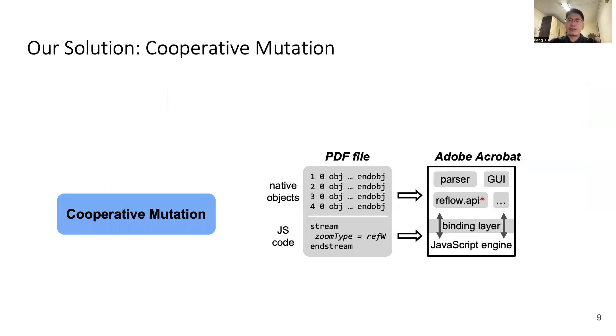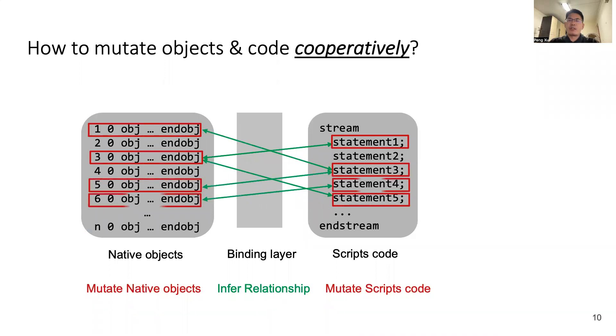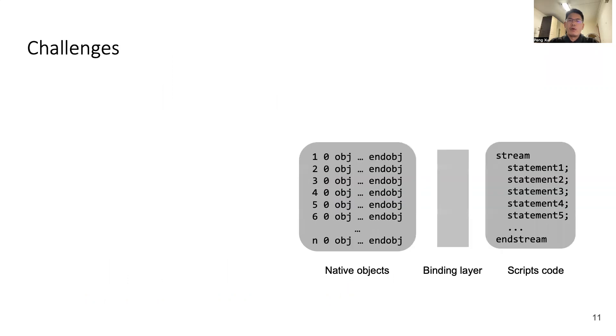In light of this vulnerability, we want to design a new solution to discover vulnerabilities related to both native objects and scripts code. Our solution is cooperative mutation. It's fairly straightforward. We mutate both native objects and scripts code in a cooperative manner. So, we come to the problem: How to achieve cooperative mutation? First of all, we need to infer the relationship between native objects and scripts code. And then, we use the inferred relationship to guide mutations on both sides. Specifically, if a scripting API has a potential connection with some objects in a document, we will assign these objects a high priority for mutations. Otherwise, we just randomly choose some objects for mutations.